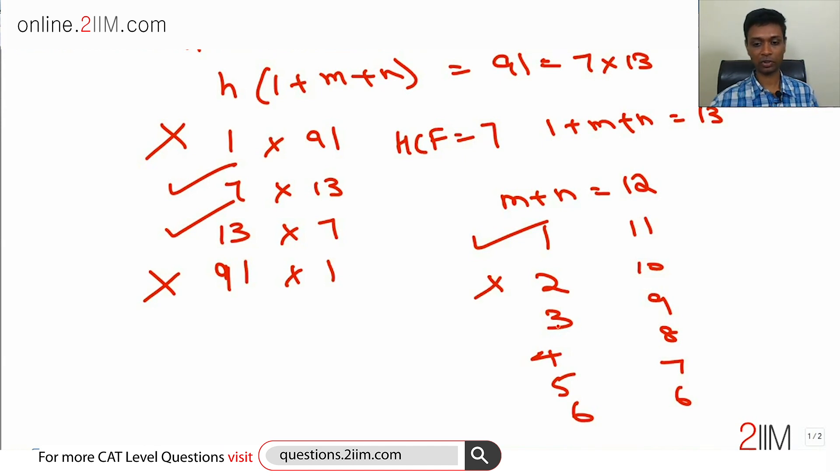So this cannot come. 3 and 9 are not coprime, this cannot come. 4 and 8 are not coprime, this cannot come. 5 and 7, that is possible. 6 and 6, not possible.